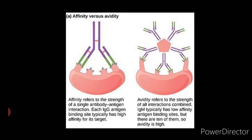For a paratope to combine with its epitope, the interacting sites must be complementary in shape, charge distribution, hydrophobicity, and in terms of donor and acceptor groups capable of forming hydrogen bonds. Close proximity of two protein surfaces can also generate repulsive forces if electron clouds overlap. In combination, the attractive and repulsive forces have a vital role in determining the specificity of the antibody molecule and its ability to discriminate between structurally similar molecules. All antigen-antibody interactions are reversible, so at equilibrium the law of mass action can be applied.